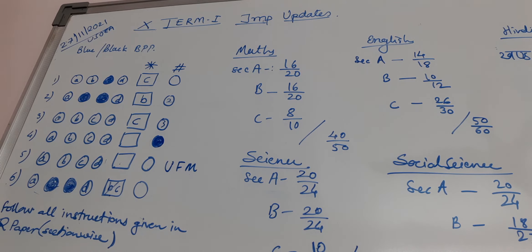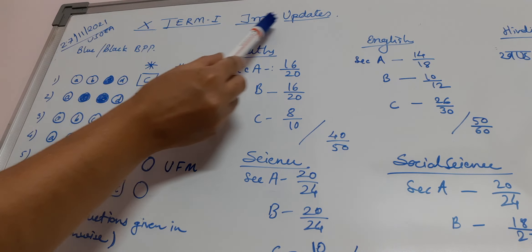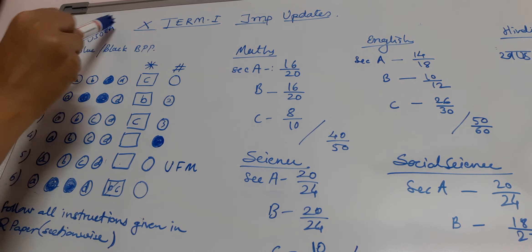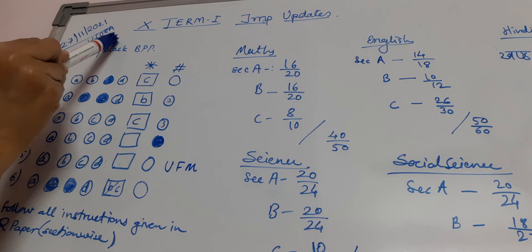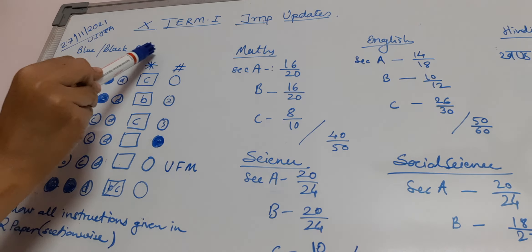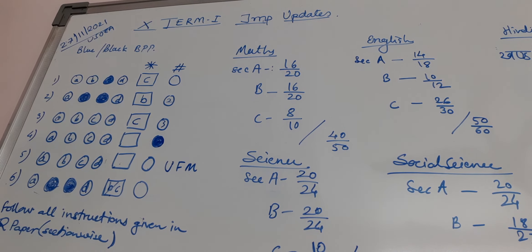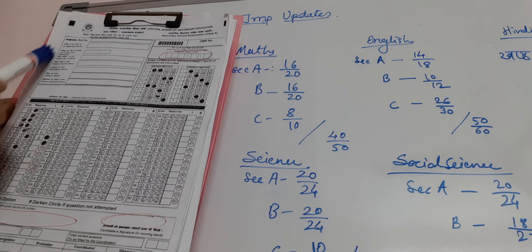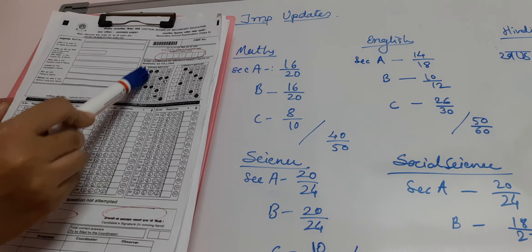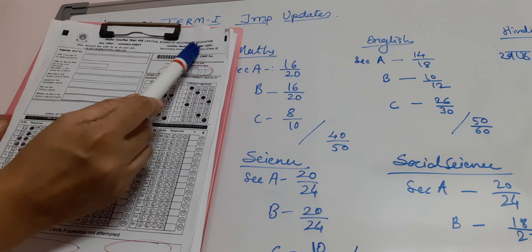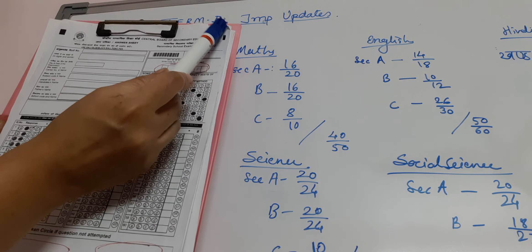Dear student, this video is regarding your first term important updates which we got on the 27th, that is today, from CBSE. You already know that students should use only blue or black ballpoint pen. How to fill the OMR sheet — that session we have already taken and given you a video also. This will be your OMR sheet and it will be pre-filled, meaning you need to write down only the question paper code here, which will be provided on the question paper at the top right corner.